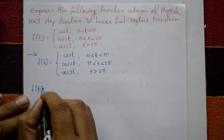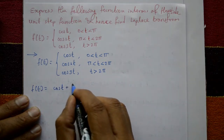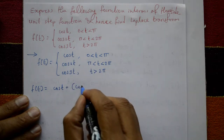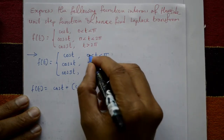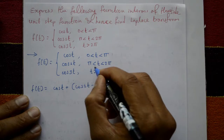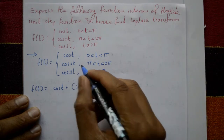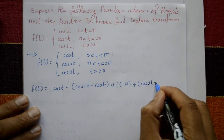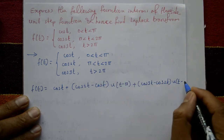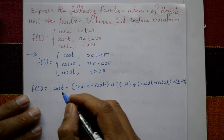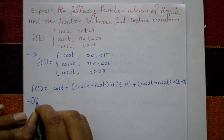Using the property, f(t) is expressed as cos t plus (cos 2t − cos t) · u(t − π) plus (cos 3t − cos 2t) · u(t − 2π). Now taking the Laplace transform on both sides.